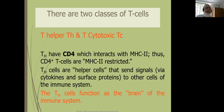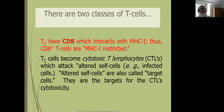MHC restriction and surface proteins: the T helper cell functions as the brain of the immune system — it instructs both T cells and B cells. There are two types of T helper cells: TH1 and TH2. TH1 helps the cytotoxic cell and TH2 helps the B cell. Cytotoxic cells — CD8 cells — become cytotoxic lymphocytes when activated by infected cells and after getting helping stimulation from T helper cells. They target cells for cell-mediated immunity against intracellular pathogens.